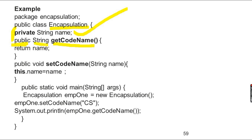The getter method is followed by the data type, which returns a String. The method returns the name. For the setter method, you declare it as public void set followed by the variable name — for example, public void setName. We have to use the setter method to update the variable.